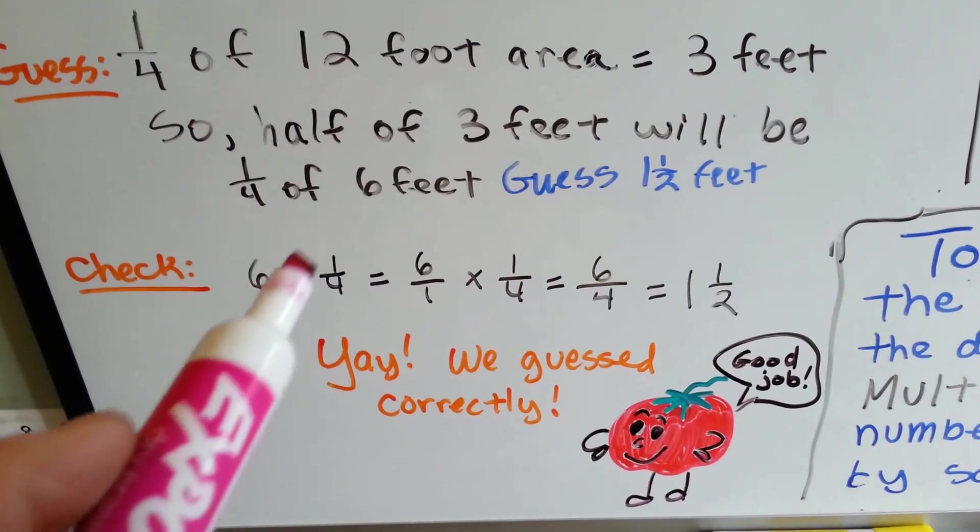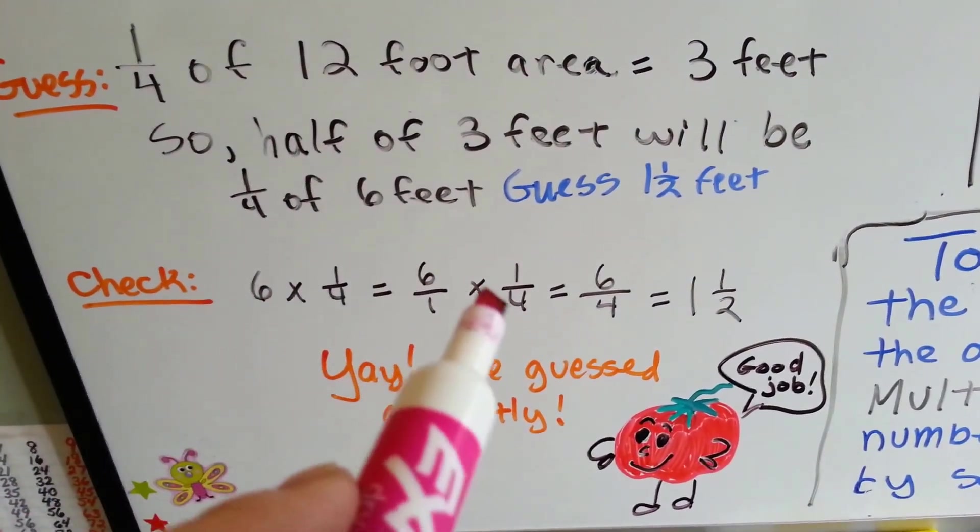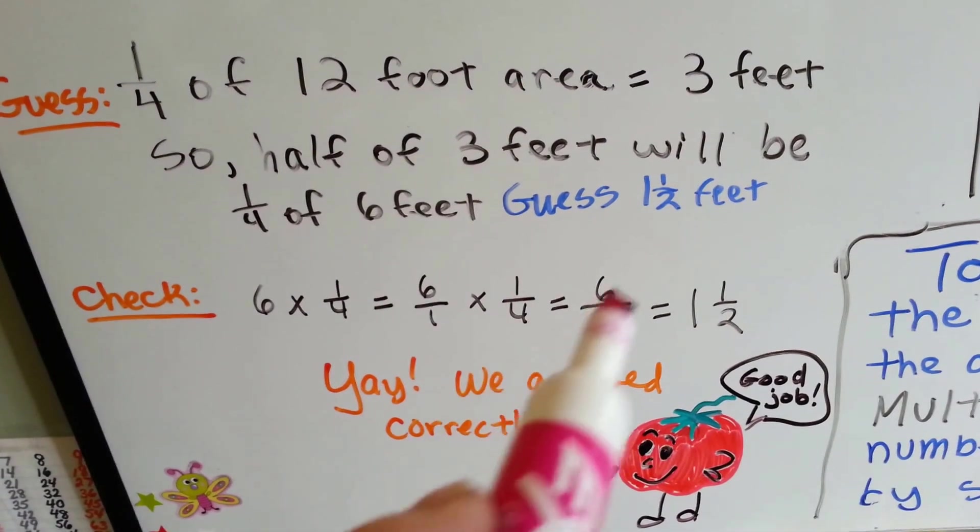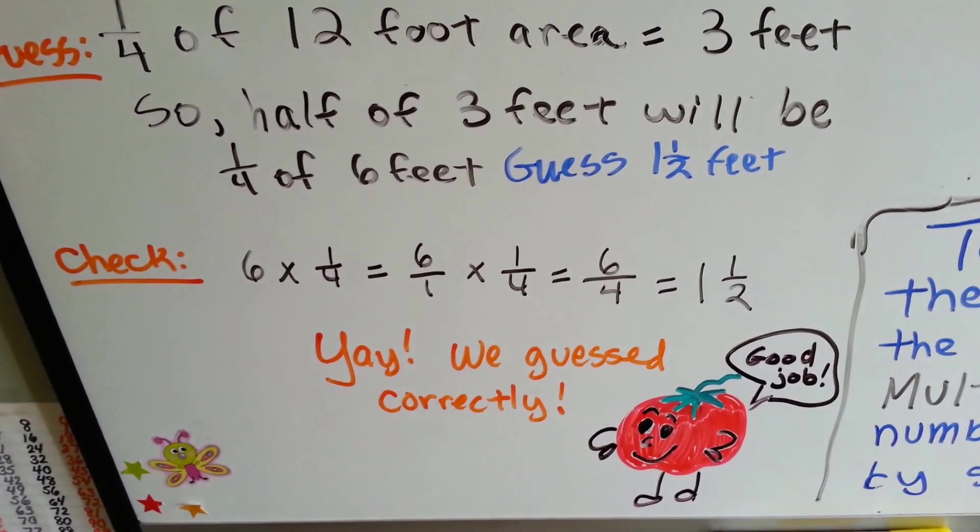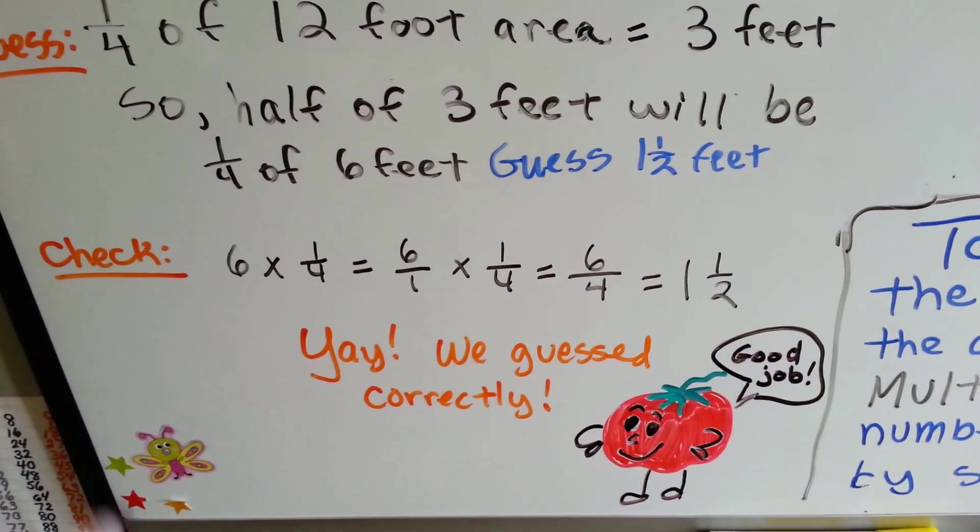I did six times one-fourth, which is six over one times one-fourth. That got me six-fourths, and that equals one and a half. So I guessed correctly. Yay!